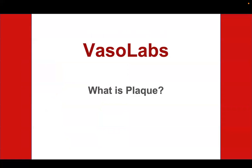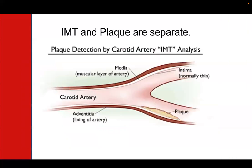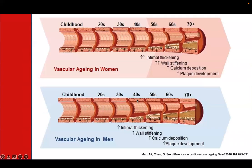So what about plaque? Plaque happens when fats, cholesterol, and other substances start to build up in sections of your artery wall. We usually measure and think of IMT and plaque separately, although they're really part of the same process.